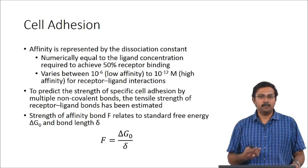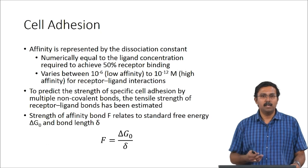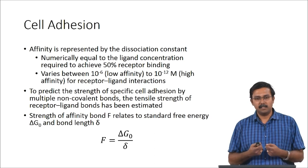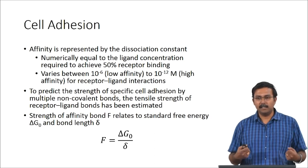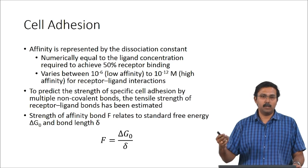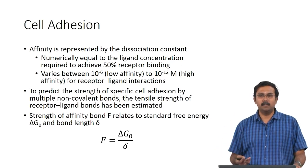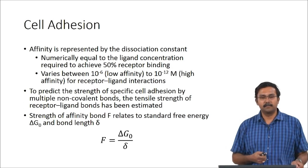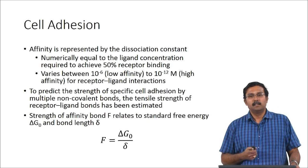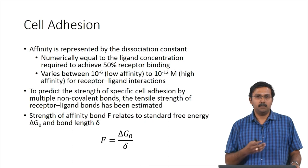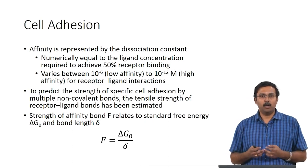To predict the strength of specific cell adhesion by multiple non-covalent bonds, the tensile strength of the receptor-ligand bonds has to be estimated. There are experiments and many studies to do this. The strength of the affinity bond relates to the standard free energy, delta G naught, and the bond length. The bond length is assumed to be greater than the size of the individual weak bonds within the binding site and less than the size of the binding site itself.